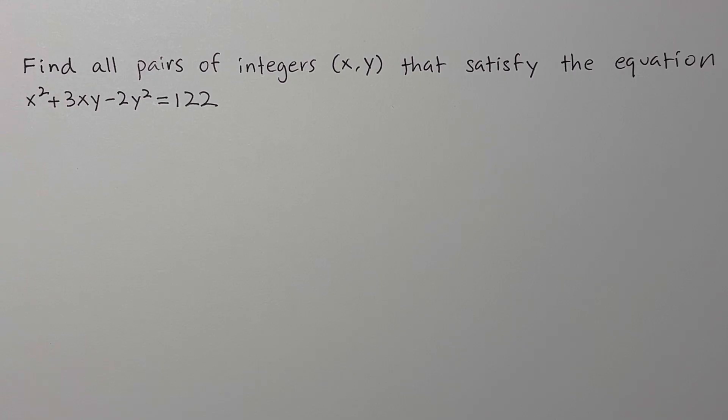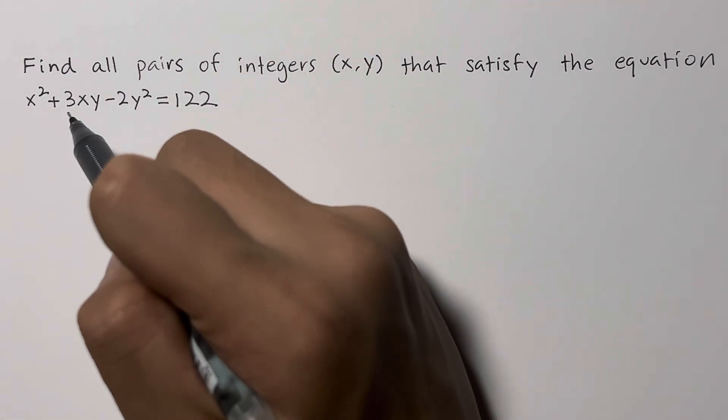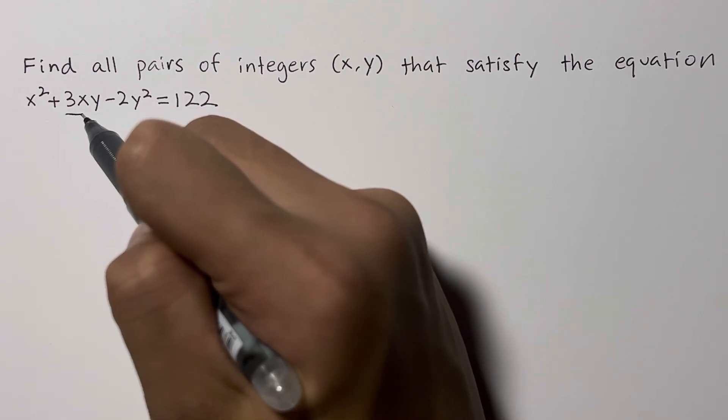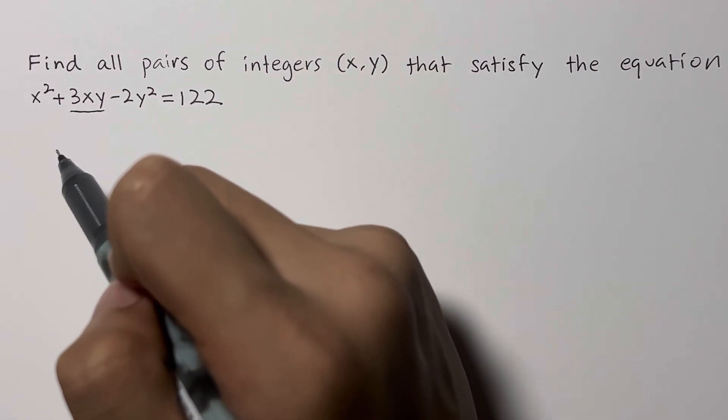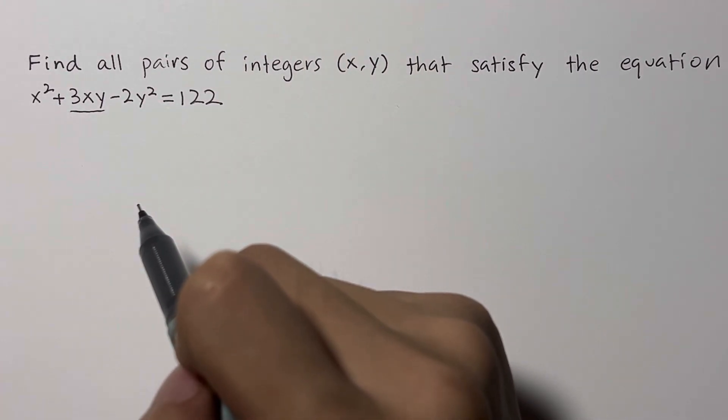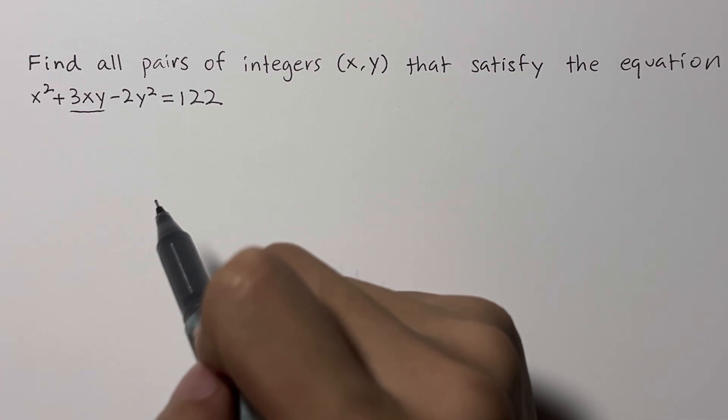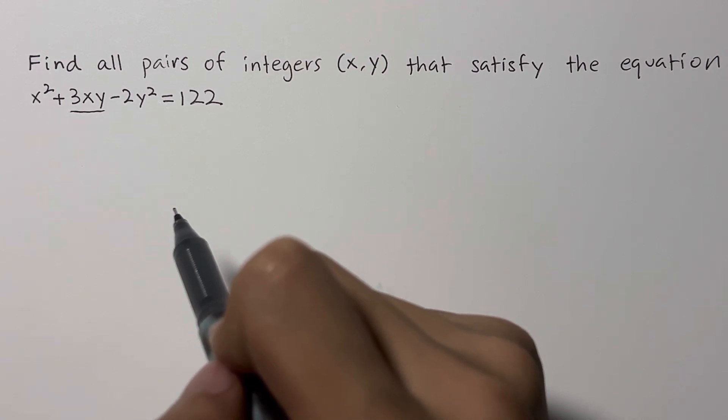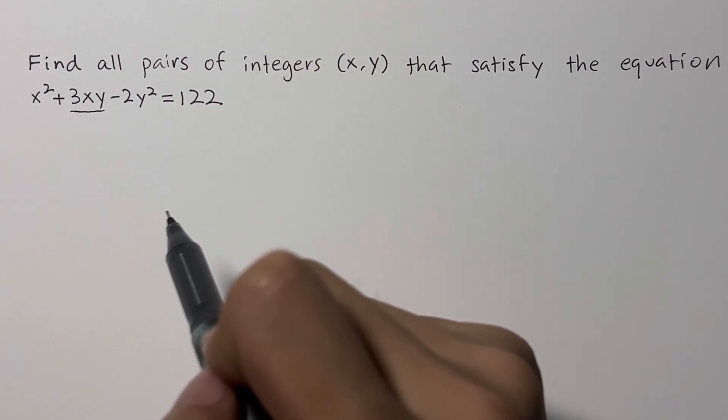So here's a breakdown on how to solve this problem. First of all, we must tame the equation by completing the square. That middle term, 3xy, is the most annoying part of the equation. Our first goal is to eliminate it. A powerful technique for this is completing the square. To make the numbers work out nicely with the 3xy term, let's multiply the entire equation by 4.